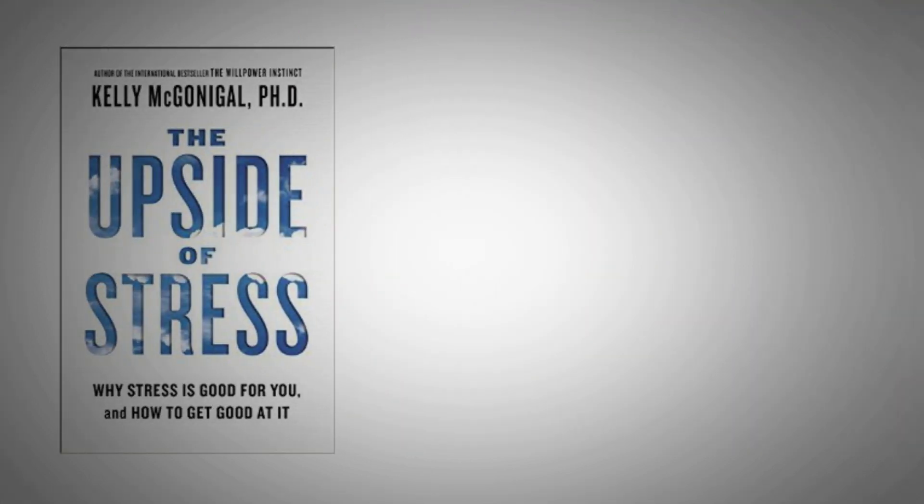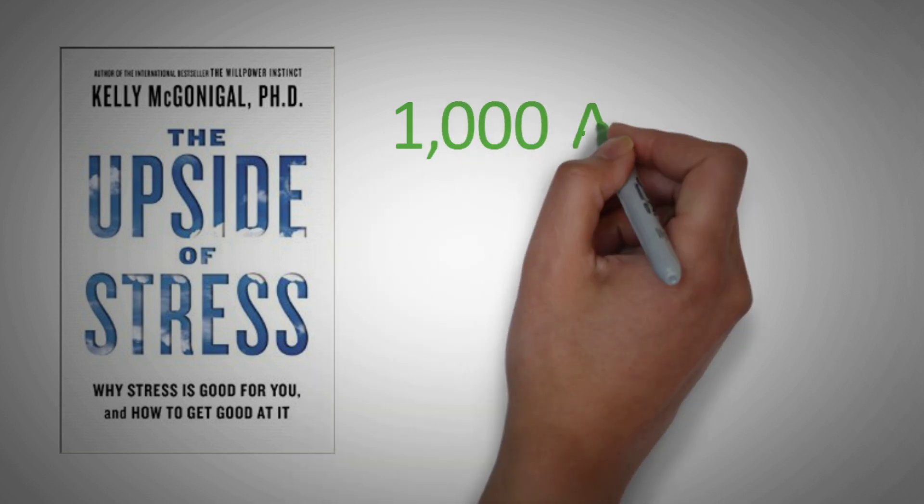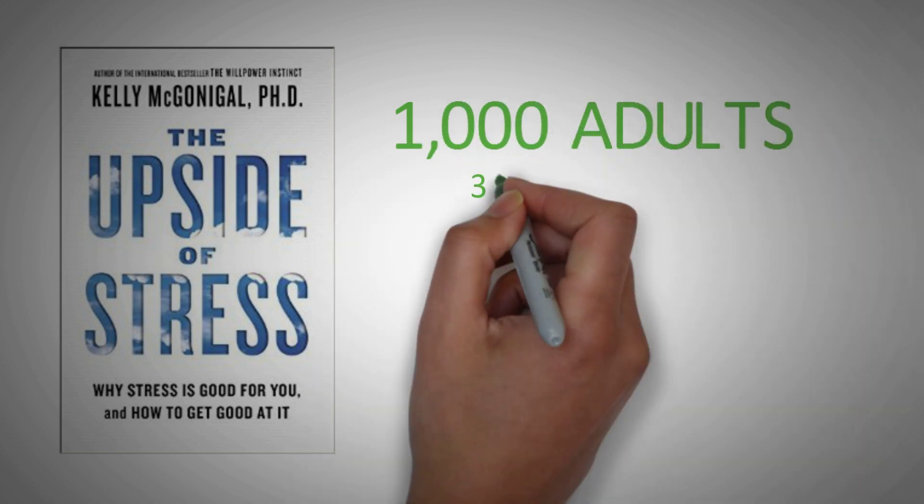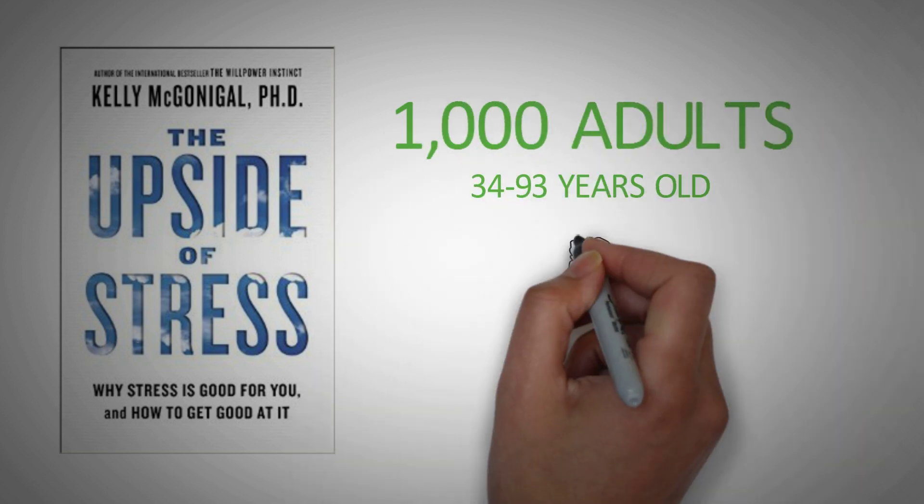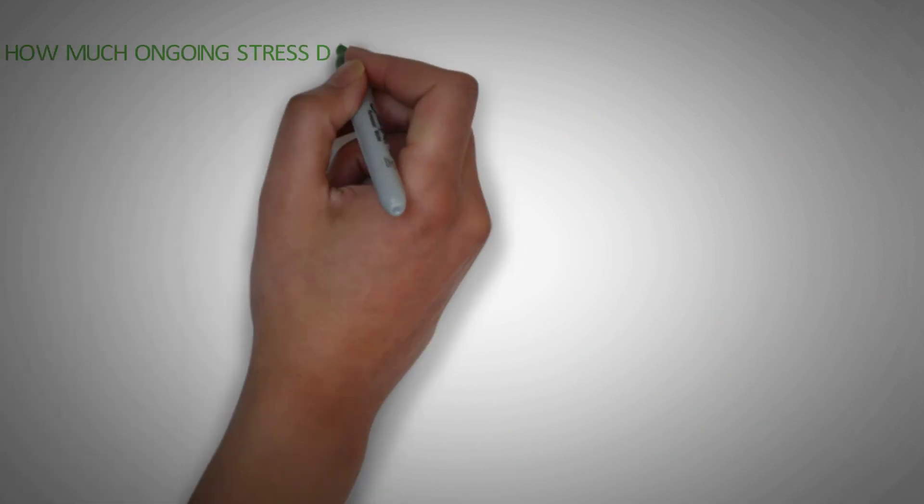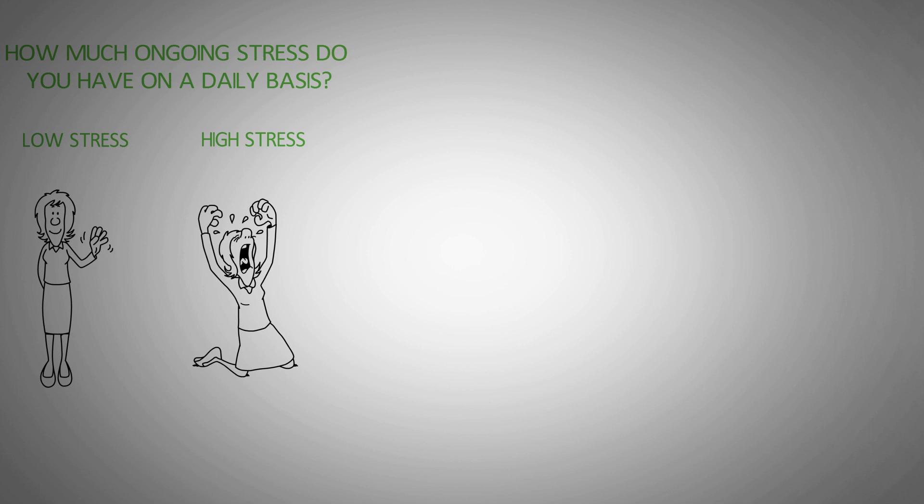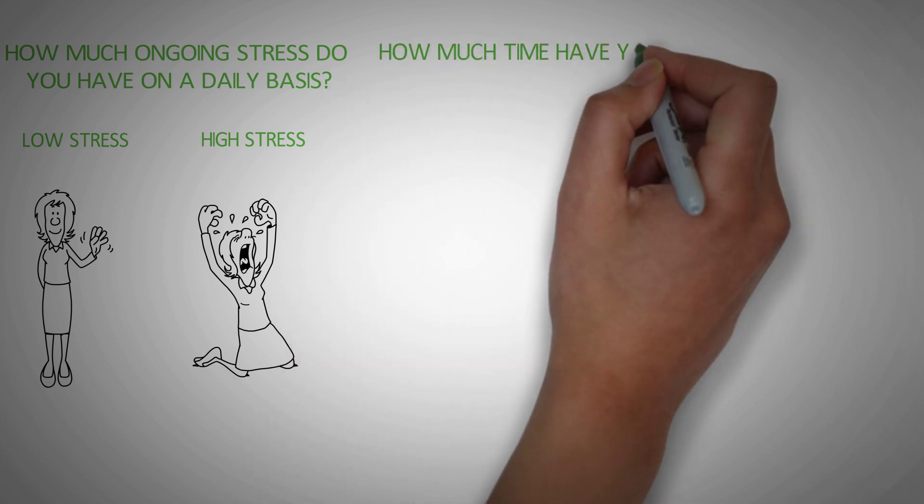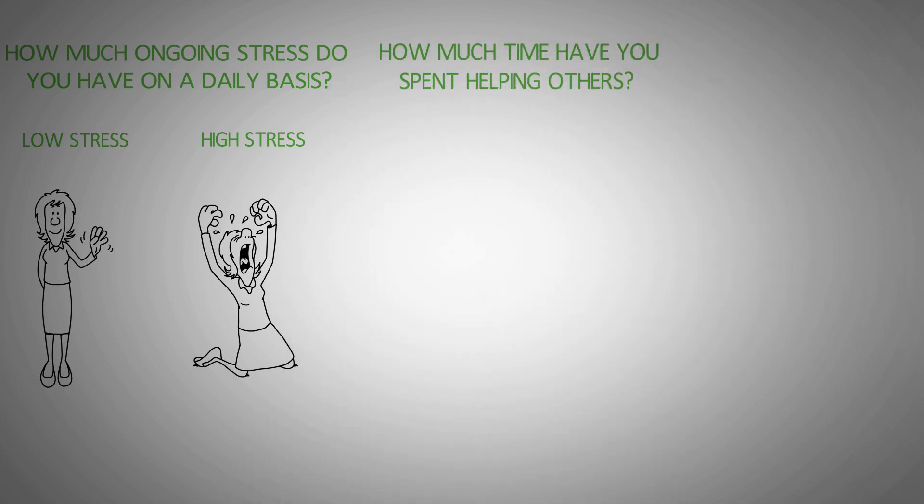Now, in the book, The Upside of Stress, Dr. Kelly McGonigal talks about this fascinating study of a thousand U.S. adults from age 34 to 93. And they were asked two questions. The first question was, how much ongoing stress do you have on a daily basis? And the answer was either high or low. And the second question they were asked was, how much time have you spent over the last one year helping other people out? And the answer was either a lot of time or not much time.